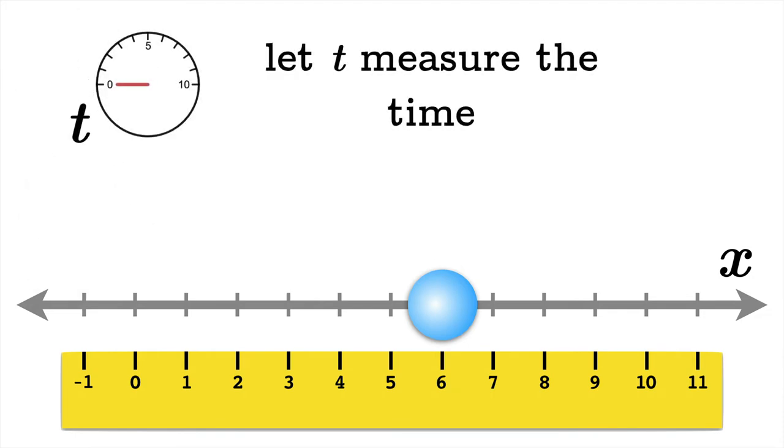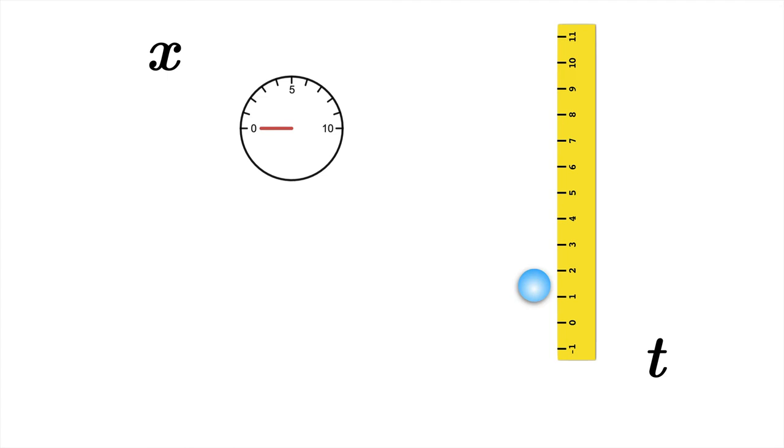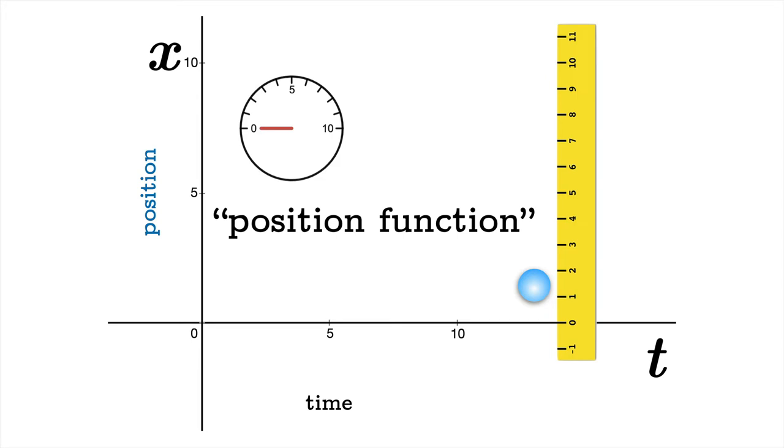Now things change in time so let's bring in T, which will be our variable for time, and the position should be a function of time. So let's imagine how we might plot such a function. We could plot the position along the vertical axis and we can plot the time along the horizontal axis and then we could imagine a position function.